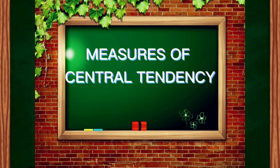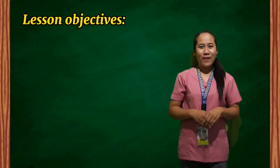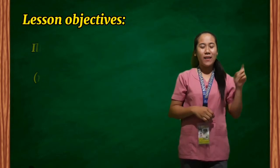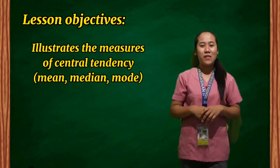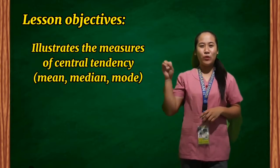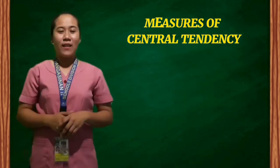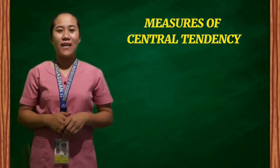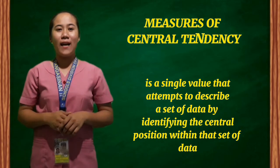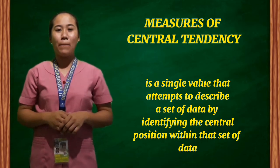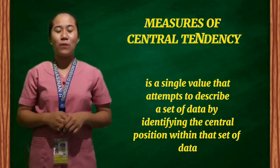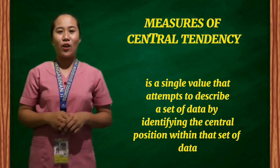Measures of Central Tendency. Here are the following lesson objectives: 1. Illustrates the measures of Central Tendency — mean, median, and mode. 2. Calculates the different measures of Central Tendency of ungrouped data. The measures of Central Tendency is a single value that attempts to describe a set of data by identifying the central position within that set of data.